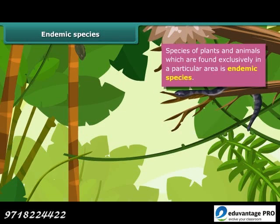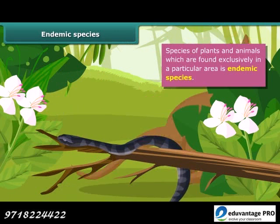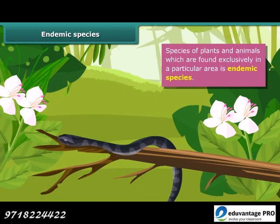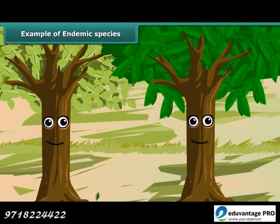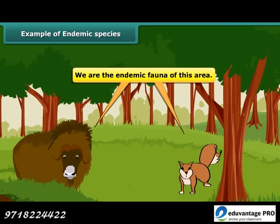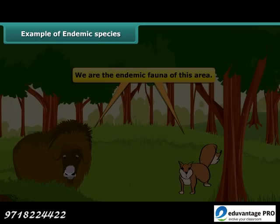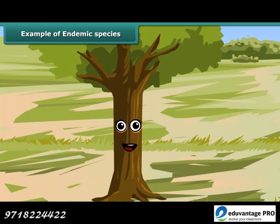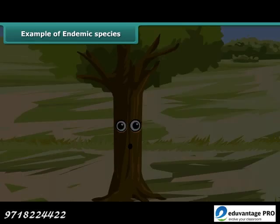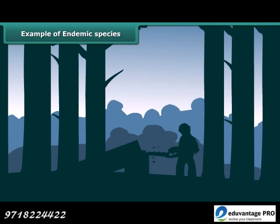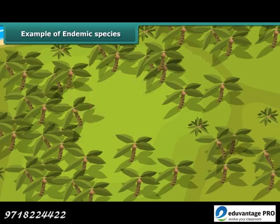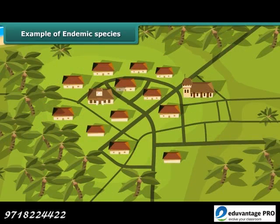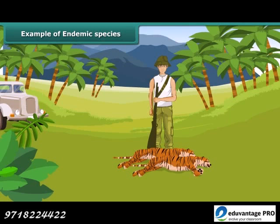Endemic species are not found anywhere else. A particular type of animal or plant may be endemic to a zone, a state, or a country. Humans are the main reason for making species endemic. The destruction of their habitat, increasing human population, and introduction of new species may affect the natural habitat of endemic species and endanger their existence.